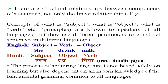In English, subject comes first, then verb, then object — for example, 'She drank milk.' In Hindi, the same concepts apply but parameters differ: 'Usne doodh pia.' Hindi, Tamil, Bangla, Assamese, and Manipuri all arrange subject, object, and verb in the SOV order — subject first, then object, then verb.